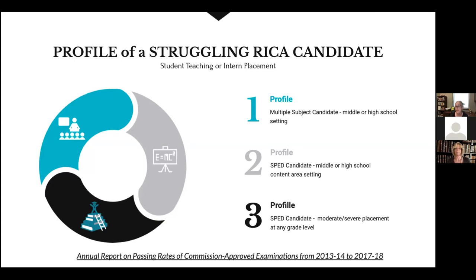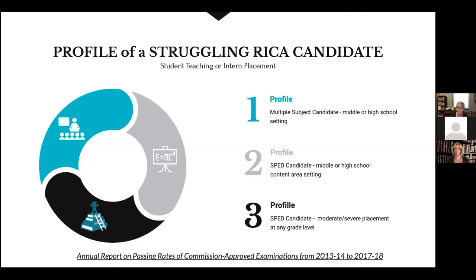The third group that struggles are those working with moderate-severe students. Very often the students with whom they're working are profoundly delayed, and these teachers do little or no actual teaching of reading in the manner assessed by the RICA test. There are also life factors at play: people who were out for extended periods, like maternity leave followed by baby bonding, didn't take the test close to when they took their reading class. Some people are just exam-phobic and put taking the test on the long finger — they planned to do it and never got around to it.